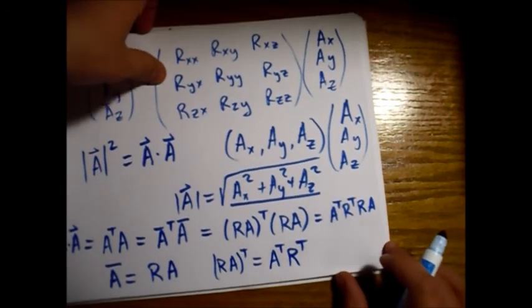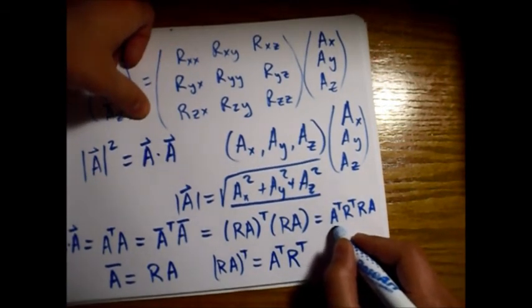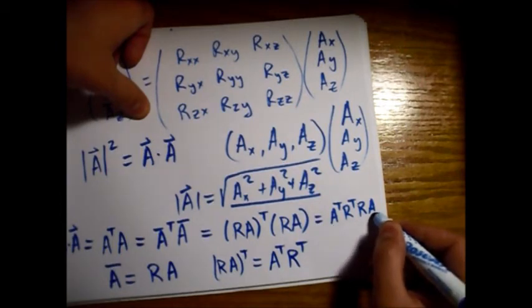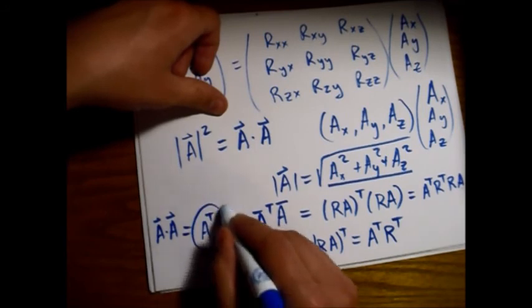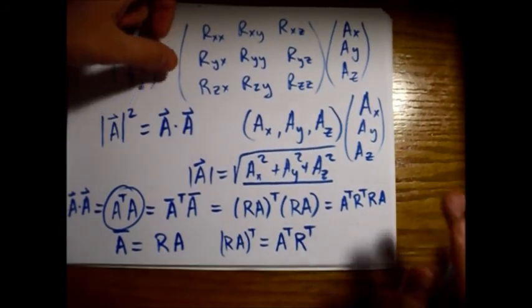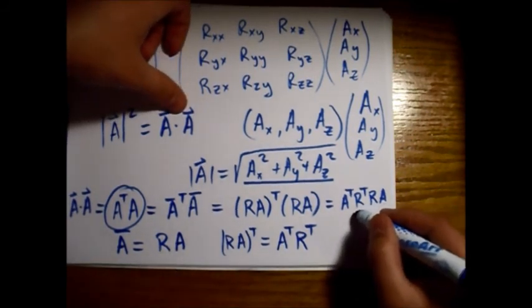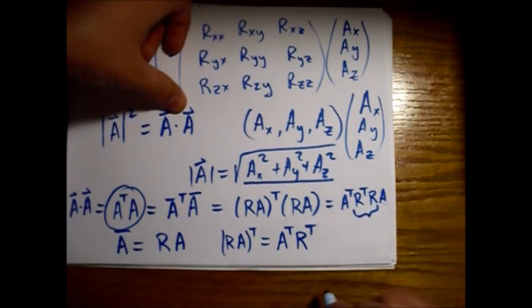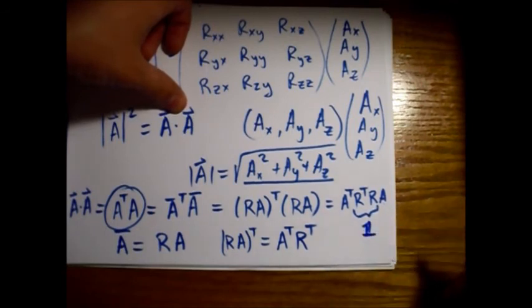Alright, so here we have the A, the original A transpose and the original A, just like what we have back here. So basically what the condition that this R matrix has to satisfy is, this middle piece just has to go away. It has to become the identity matrix.